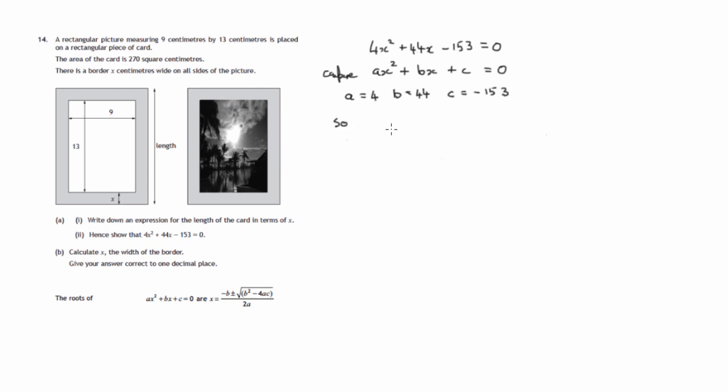So, the formula tells us we'll get the roots or solution to this equation, x, if we do the following: minus b plus or minus square root of b² - 4ac all over 2a. So, that means that x is, and let's substitute the values, negative 44 plus the square root of 44² minus 4 times 4 times negative 153, and all of that, whatever it comes to, would be divided by twice 4, which is 8.